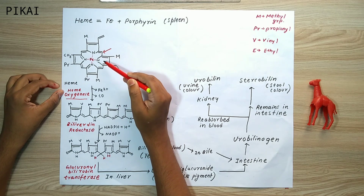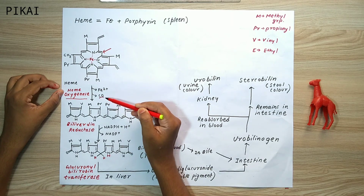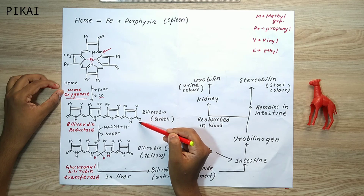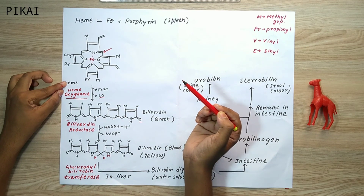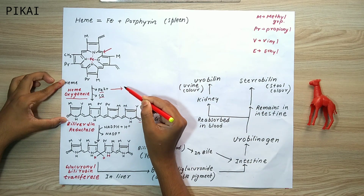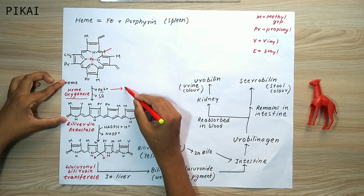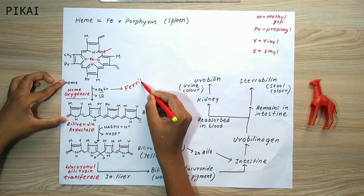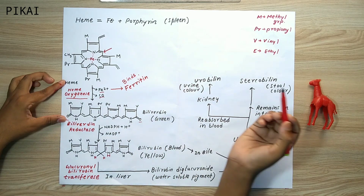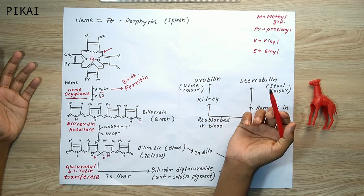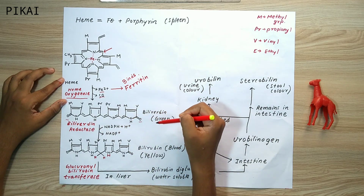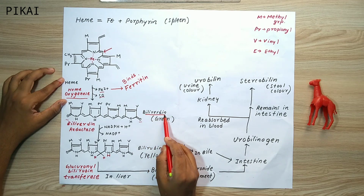The breakdown of the porphyrin ring occurs, releasing the ferrous ion Fe2+, and the two ends of the ring get oxidized to ketone groups. The released Fe2+ is quickly absorbed and stored by the protein ferritin, which serves as the storage house for iron. The cyclic porphyrin ring then opens into a linear structure called biliverdin.